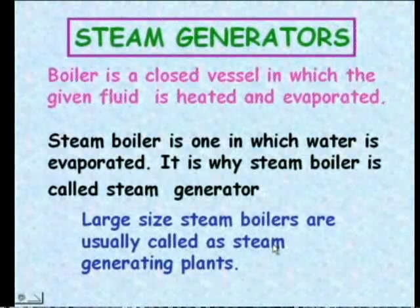Large-size steam boilers are usually called steam generating plants. When it comes to industrial purposes, we call them steam generators. In olden days, we had boilers in our houses too, in which case they were simply called boilers. Now, what does a boiler need to contain to produce steam? The basic elements of a boiler are: shell, furnace, heating source, steam space, mountings, and accessories.